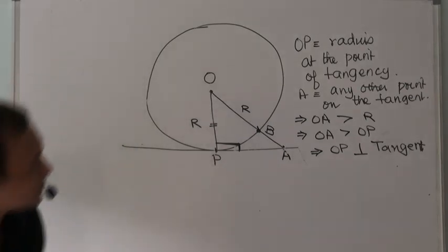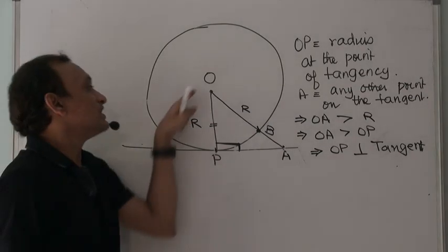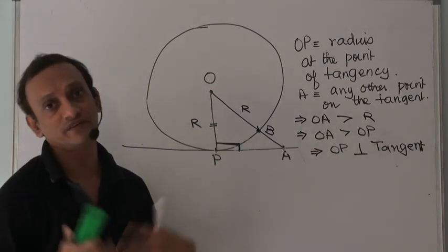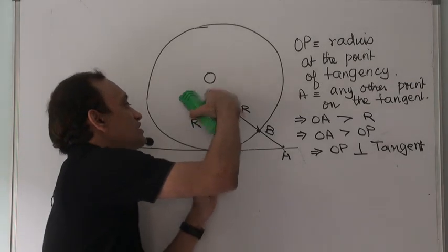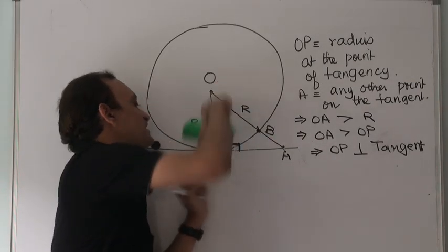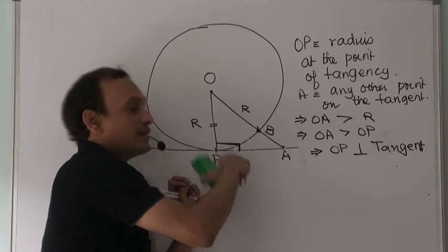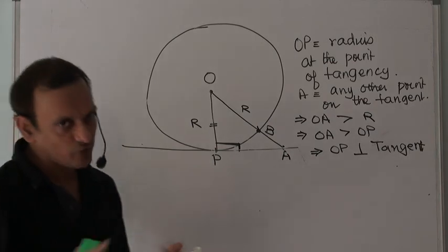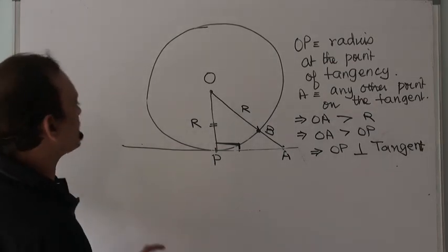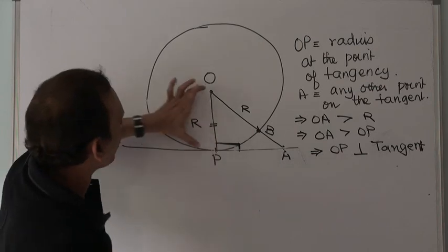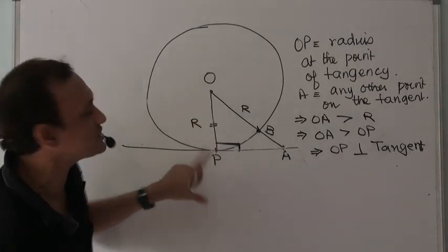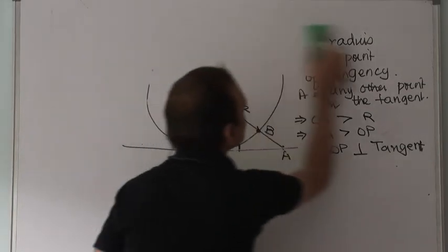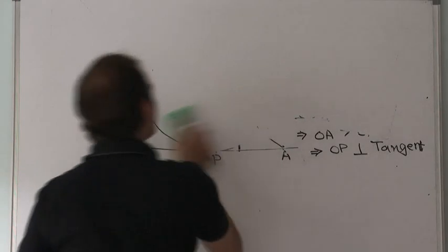So the radius at the point of tangency will always be perpendicular to the tangent — that is what we have established. The tangent will always be perpendicular to the radius drawn at the point of tangency; this angle will always be 90 degrees. Now, understanding this property of tangents, a related property is what I want to communicate next.